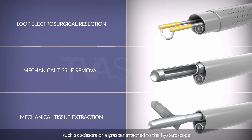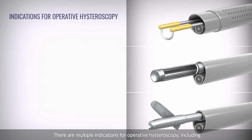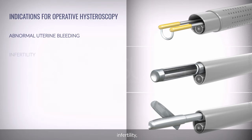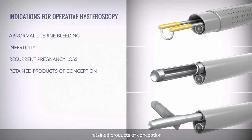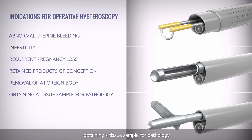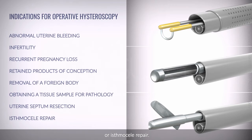There are multiple indications for operative hysteroscopy, including abnormal uterine bleeding, infertility, recurrent pregnancy loss, retained products of conception, removal of a foreign body, obtaining a tissue sample for pathology, uterine septum resection, or isthmocele repair.